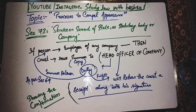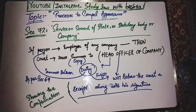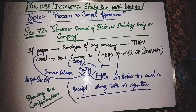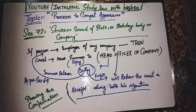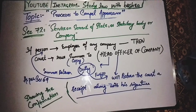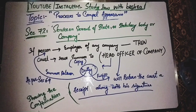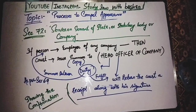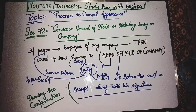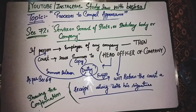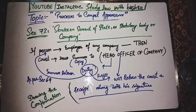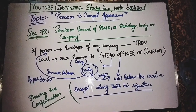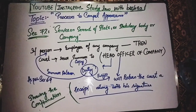Section 72 deals with service on a servant of state, statutory body, or company. If a person is an employee of a company, the court will issue a copy of the summon to the head officer of that company. It then becomes the duty of that officer to deliver the summon to the required person. Once the duty is fulfilled, that officer returns the summon copy to the court with his own signatures, confirming that the summon has reached the required person.